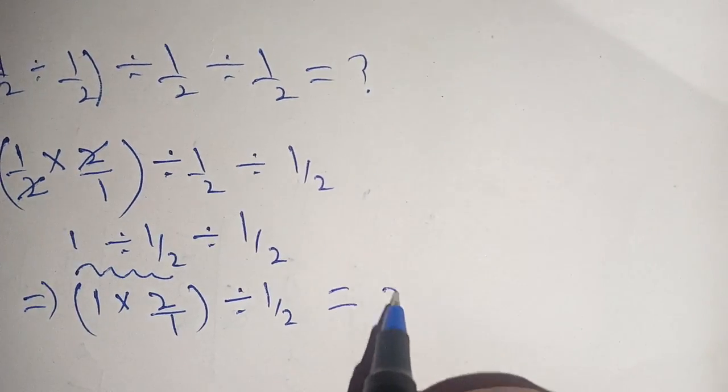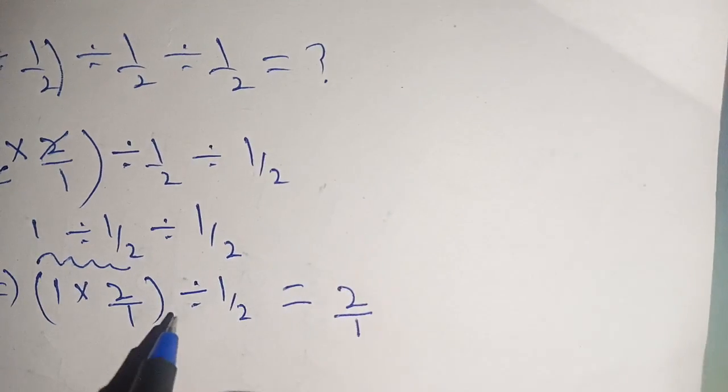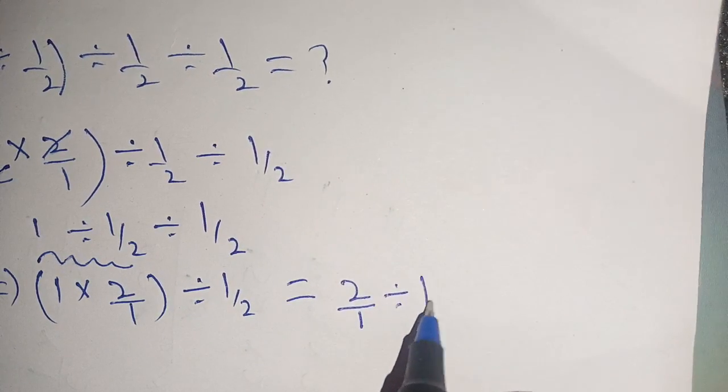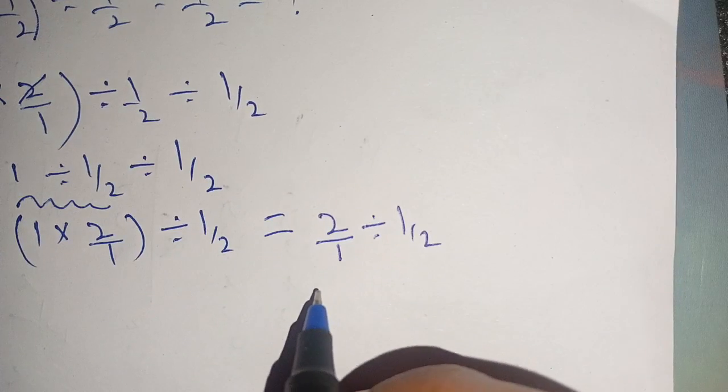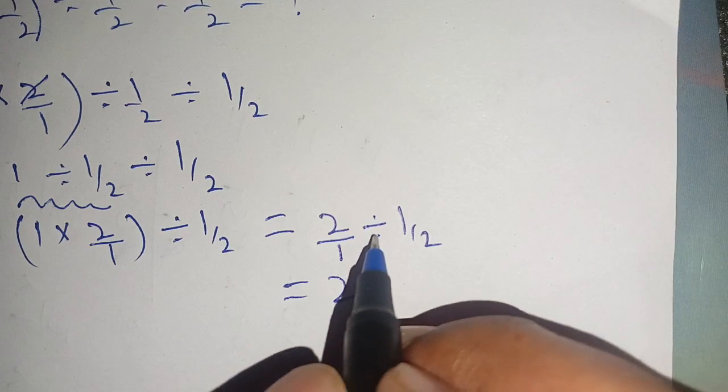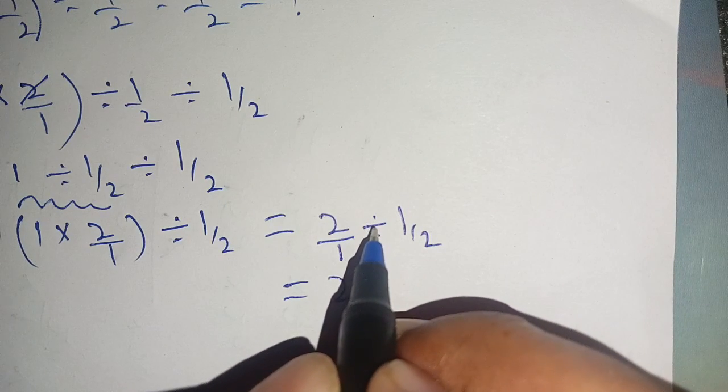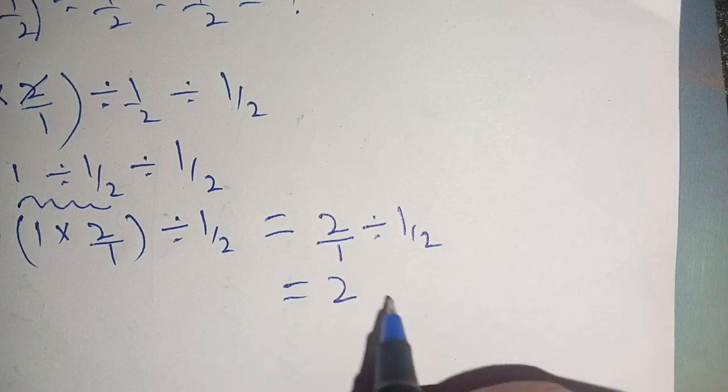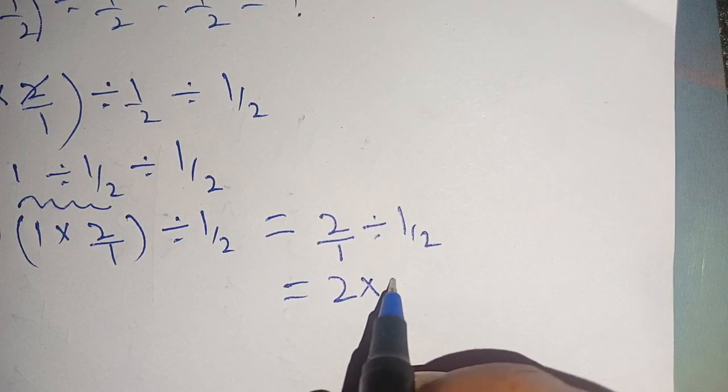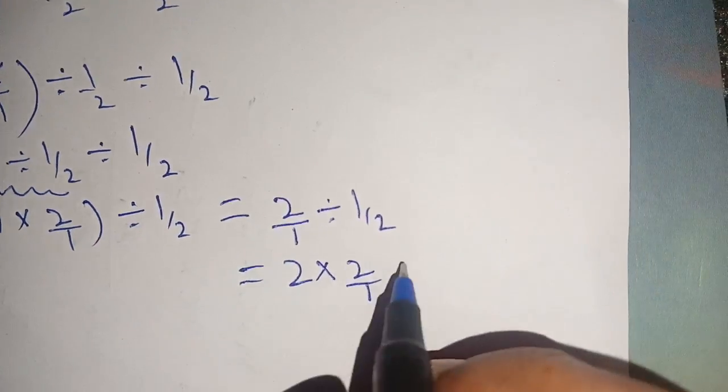Now we can write this as 2. When we convert this division to multiplication, it becomes multiply 2 divided by 1.